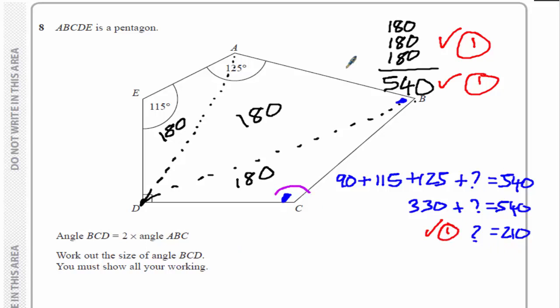So I now know that this angle and this one have to add up to 210. I know from the question that angle BCD, this one, is double the size of angle ABC, this one here. So if I call this angle X and this is going to be double, that's going to be 2X. So I'm left with an equation. 2X plus X is 210. And I have my fourth mark.